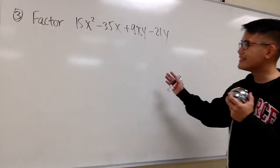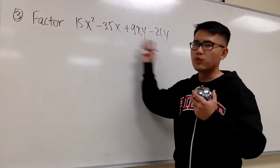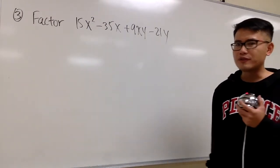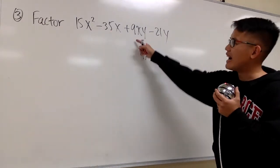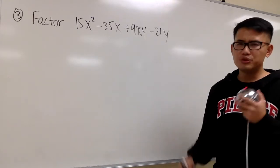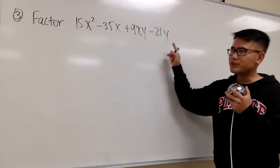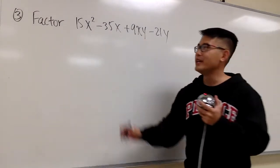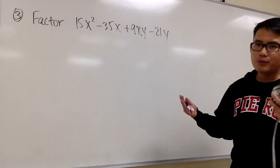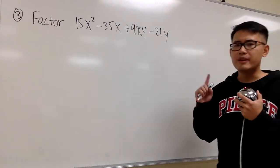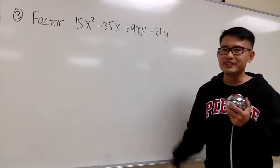We're going to factor this out. Notice that we have four terms. Can we still factor out a GCF from all four terms? Let's talk about the number first. Can we think of a number that goes into 15, 35, 9, and 21? Does 3 work? Well, 3 goes into 15, 3 goes into 9, 3 goes into 21, but unfortunately 3 does not go into 35. So in terms of numbers, there's nothing besides 1, and factoring out 1 just gives back the original, so it doesn't do us any good.